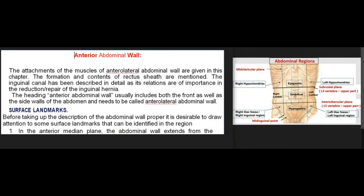Anterior abdominal wall. The attachments of the muscles of anterolateral abdominal wall are given in this chapter. The formation and contents of rectus sheath are mentioned. The inguinal canal has been described in detail as its relations are of importance in the reduction and repair of inguinal hernia. The heading anterior abdominal wall usually includes both the front as well as the side walls of the abdomen and needs to be called anterolateral abdominal wall.